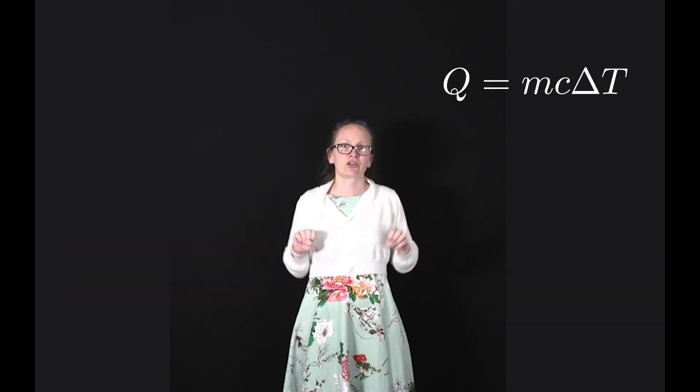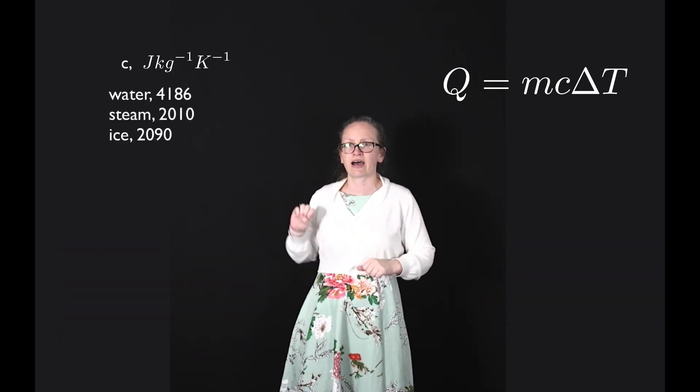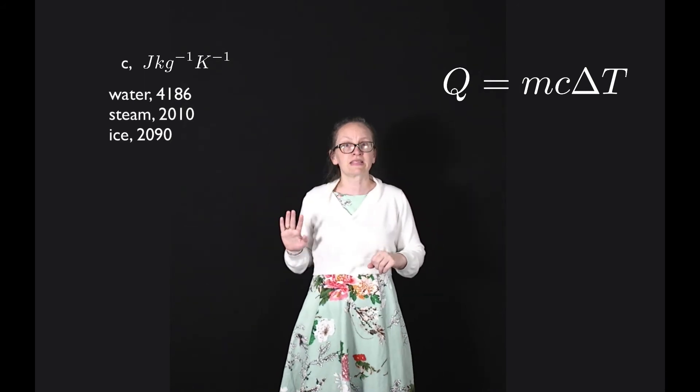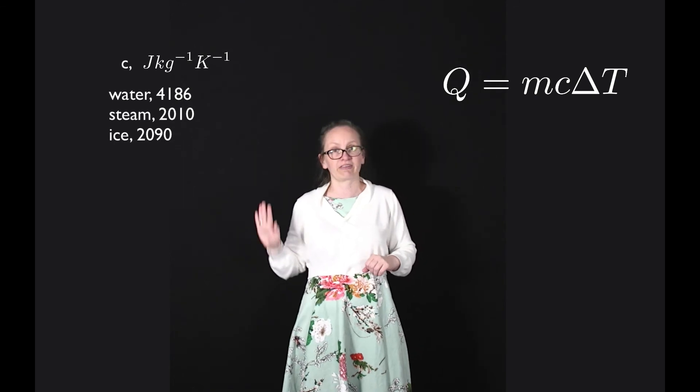The specific heat also depends upon the phase of the substance. If we consider water which is turned into steam, then the specific heat of the steam is equal to 2010 joules per kilogram per kelvin.